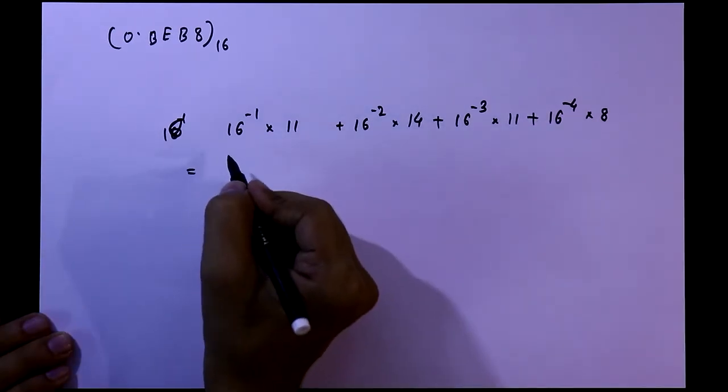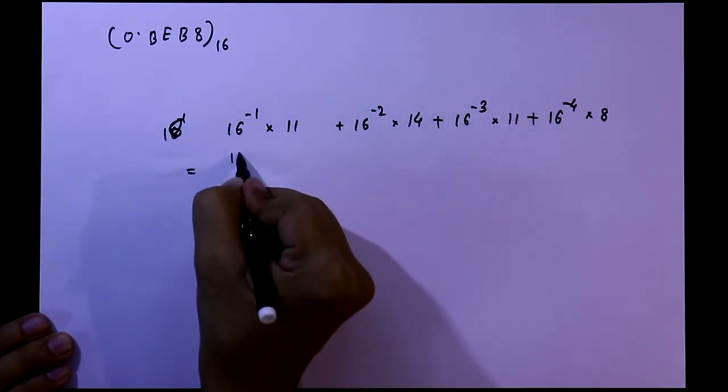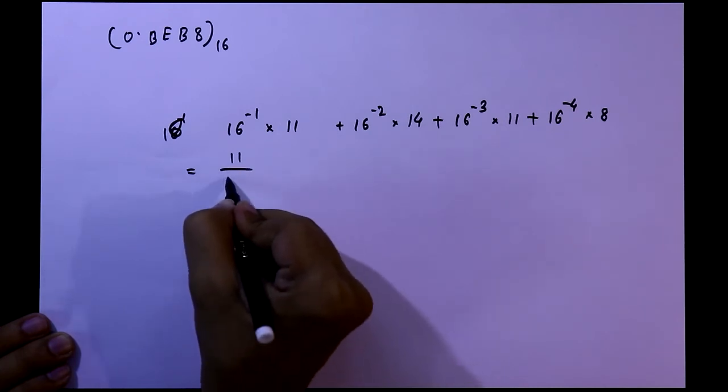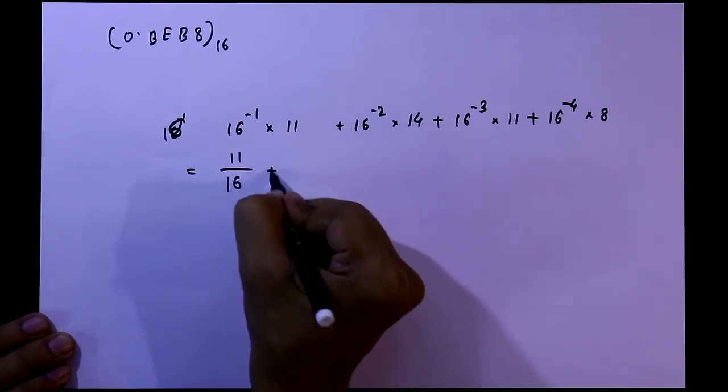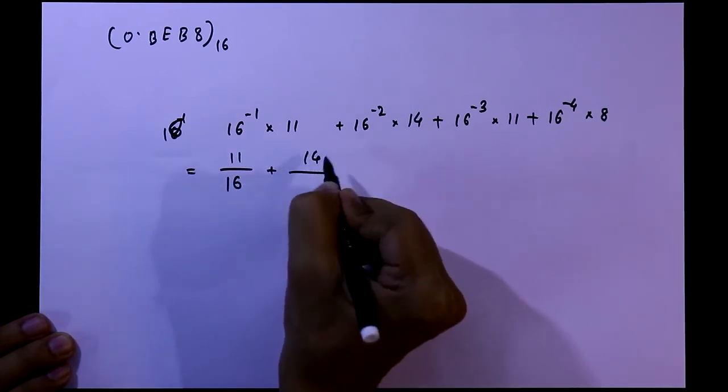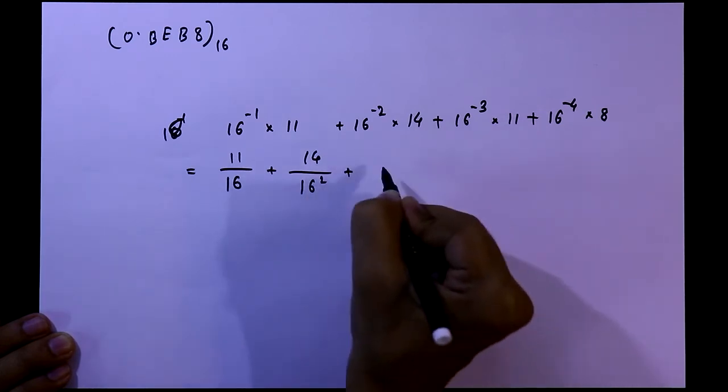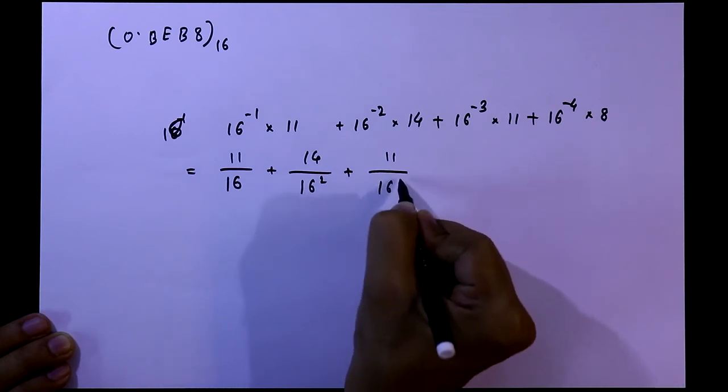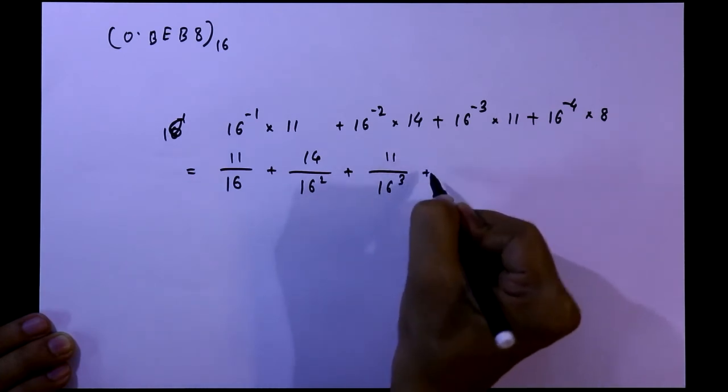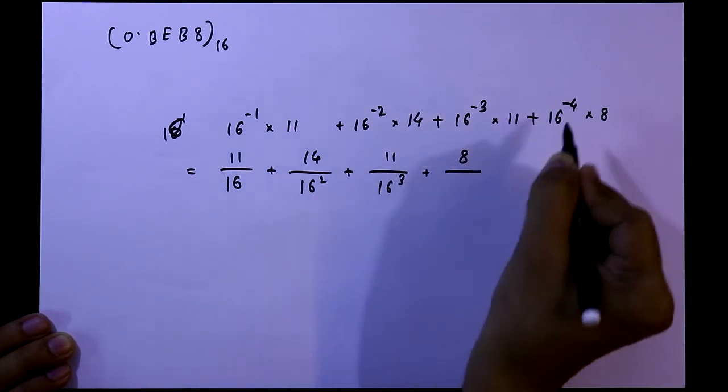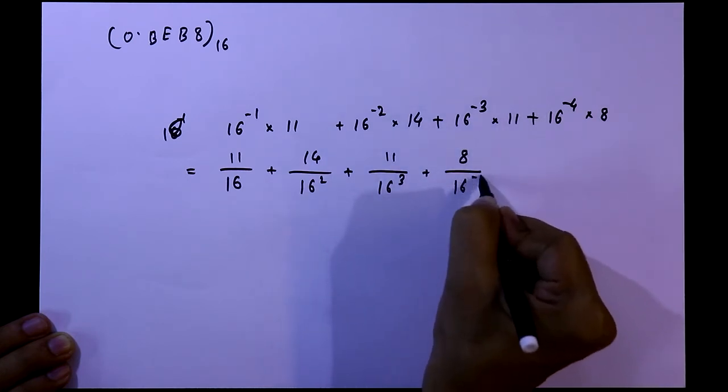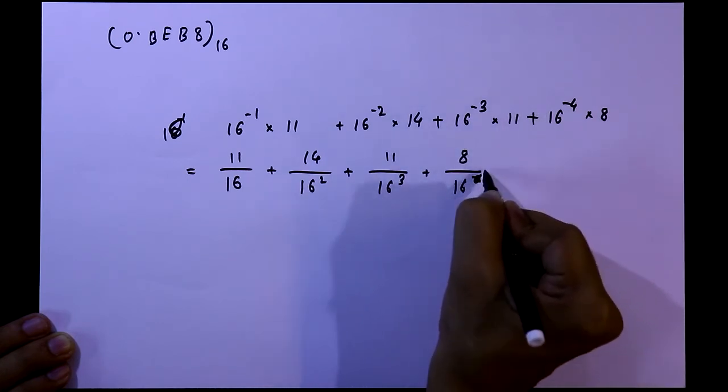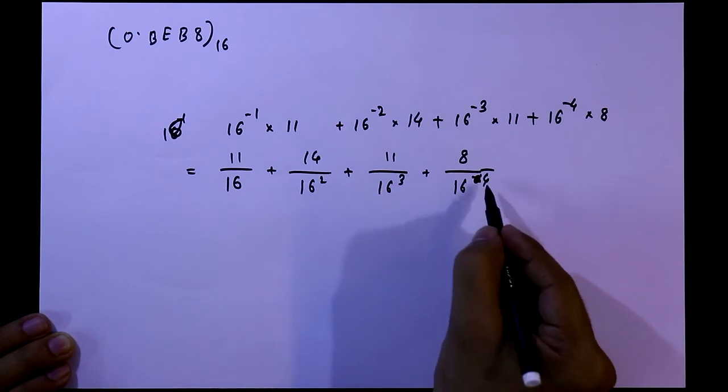Now this thing we can write it as 11 by 16, plus 14 divided by 16 square, plus 11 divided by 16 cube, plus 8 divided by 16 to the power 4.